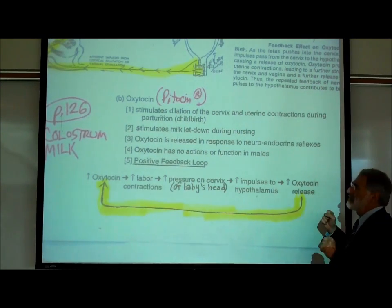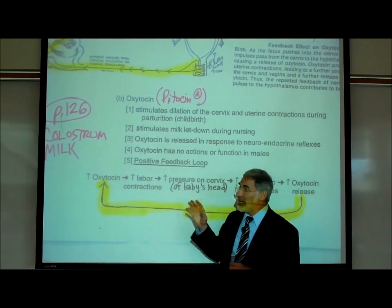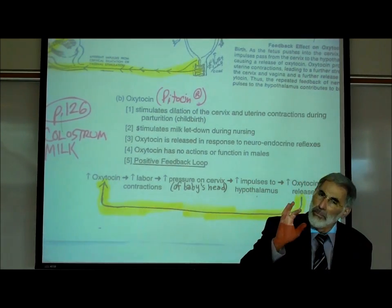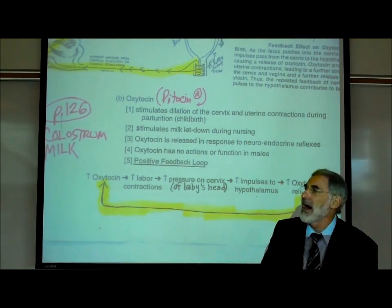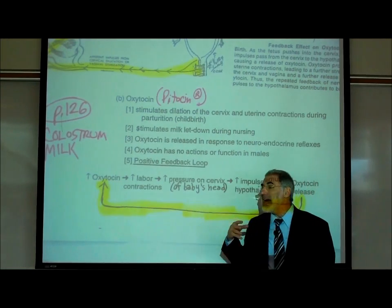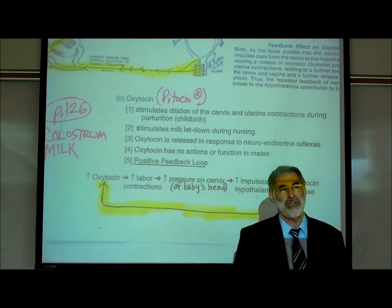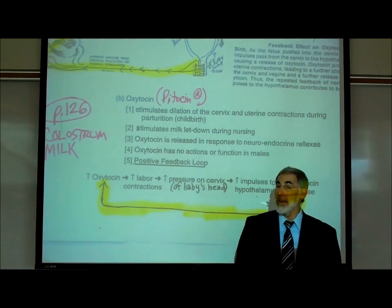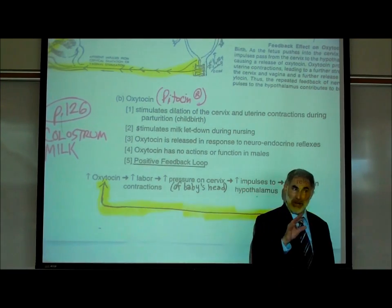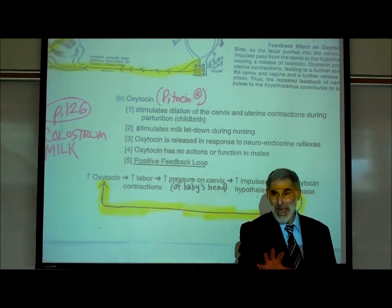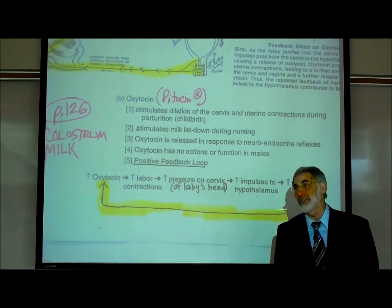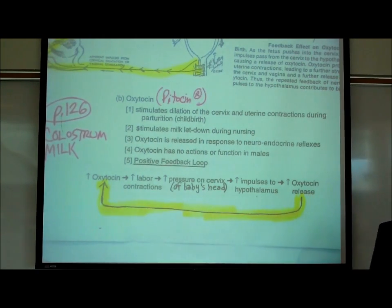A very bizarre thing about oxytocin is that unlike almost everything else in the body, it follows a positive feedback response rather than a negative feedback response. This was explained in those five pages in chapter one that summarized both negative and positive feedback.